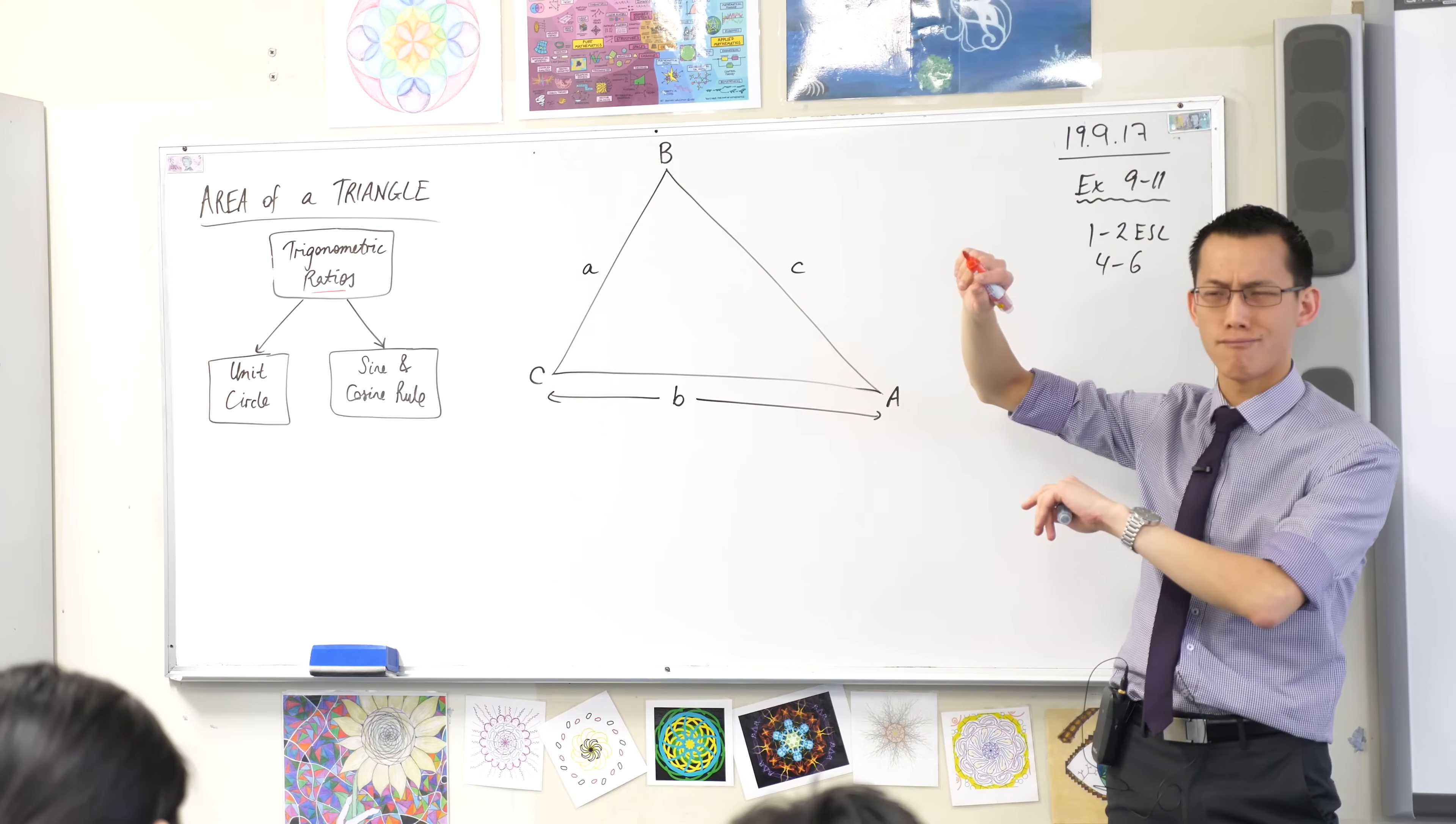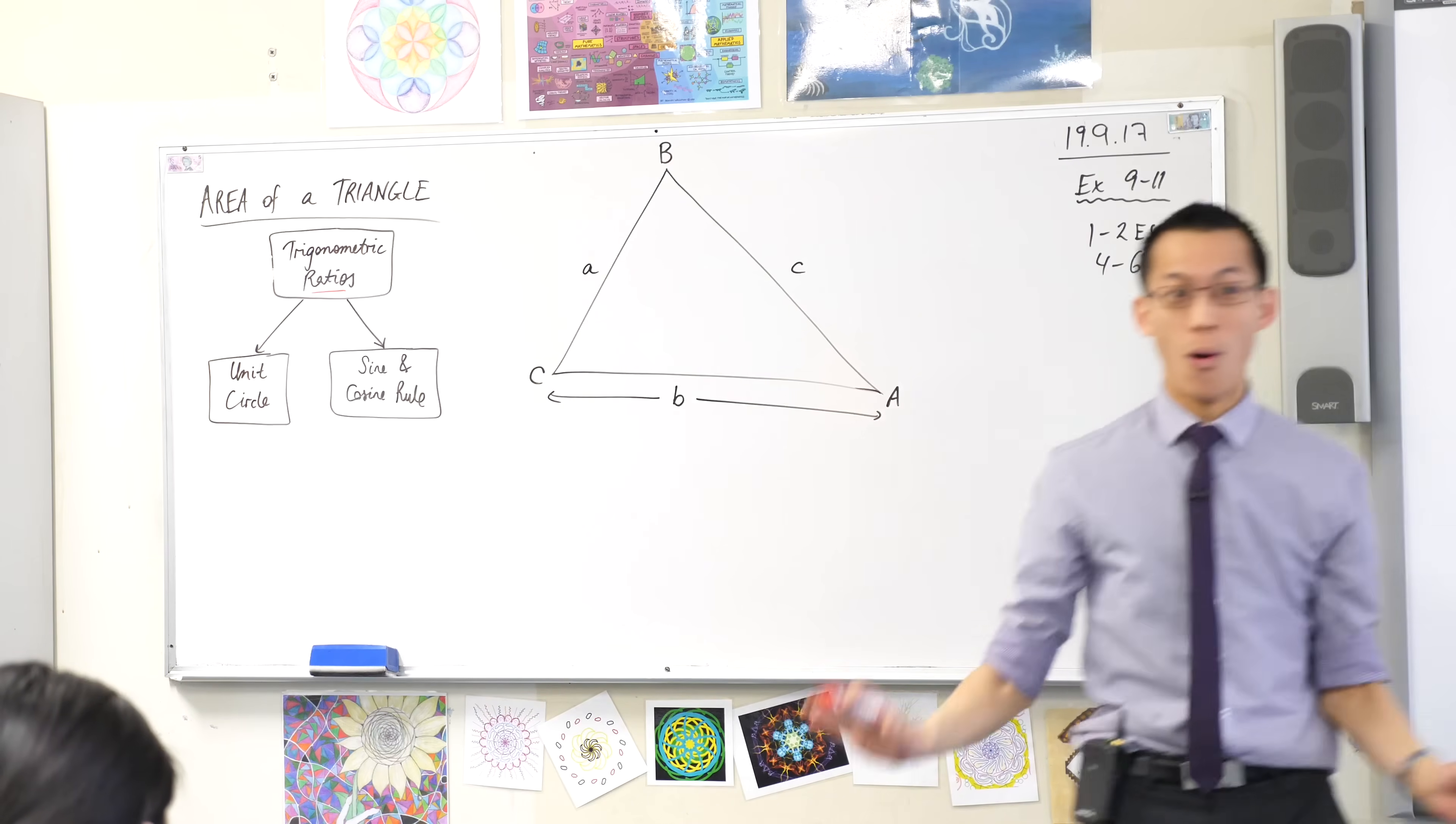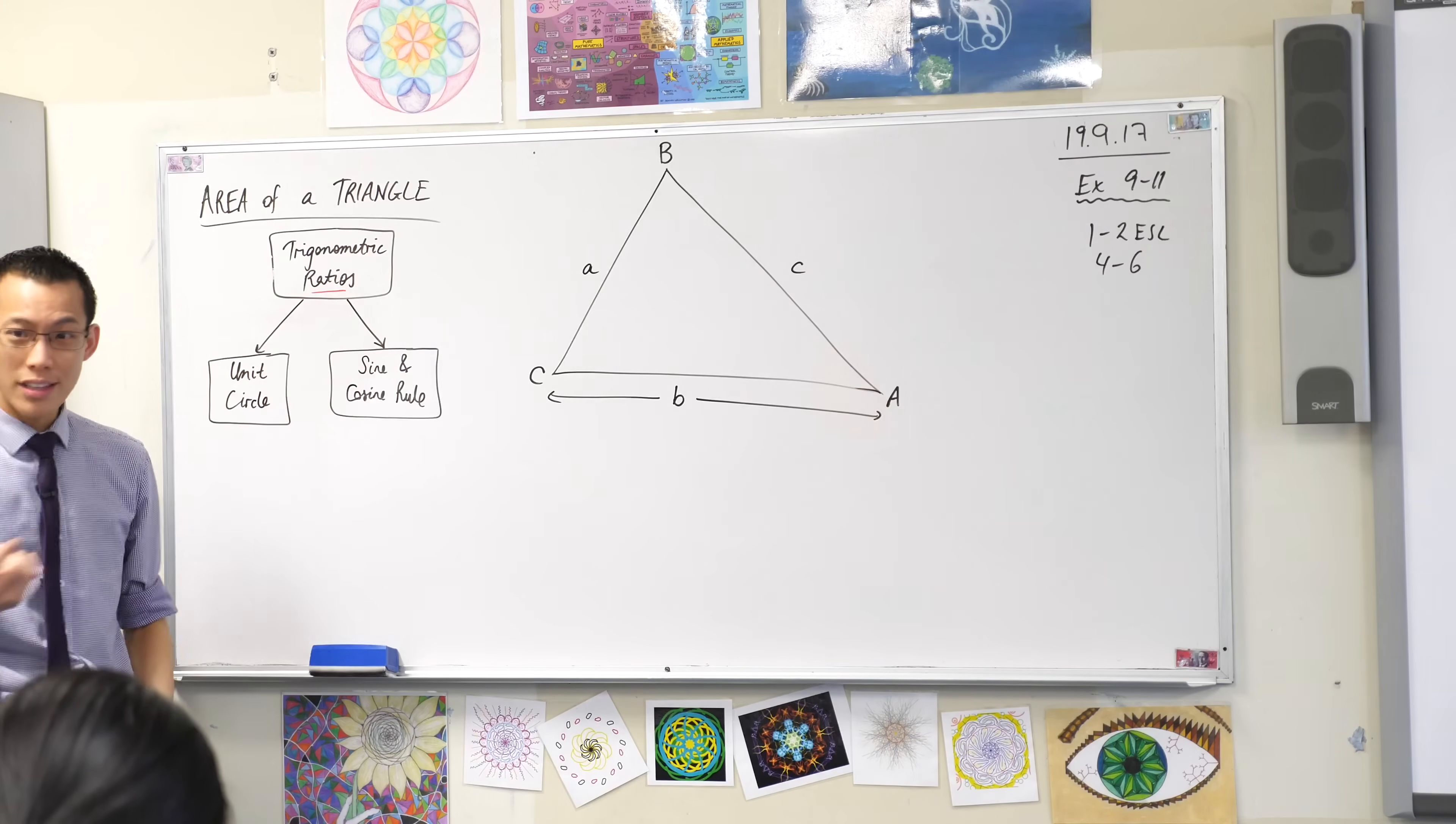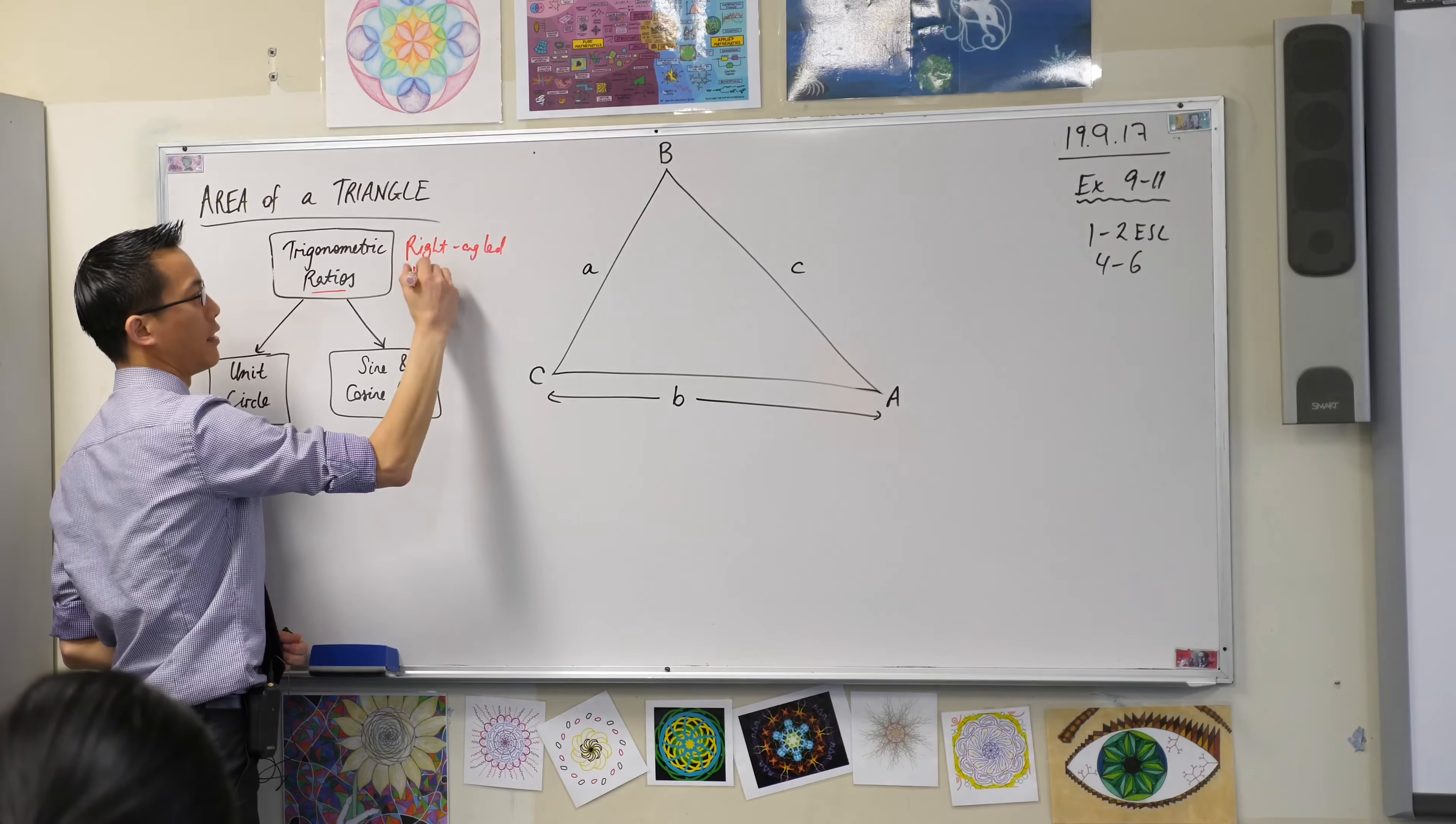Opposite over hypotenuse. Cos is adjacent over hypotenuse and tan is opposite over adjacent. So, all good, we think of sine, cos and tan only as these ratios and only in right angled triangles. Right angled triangles only.